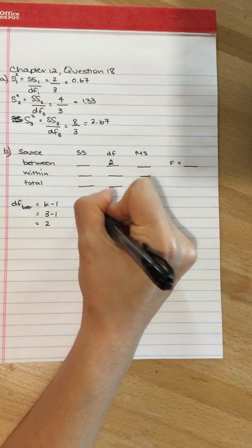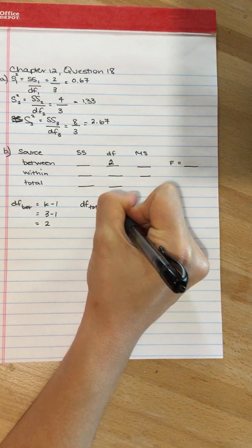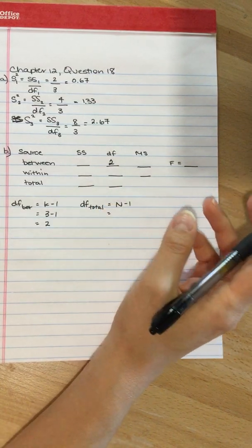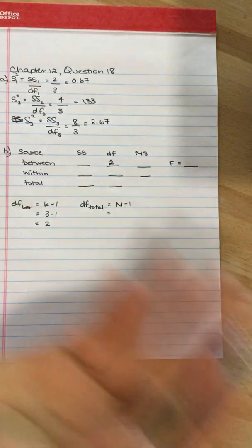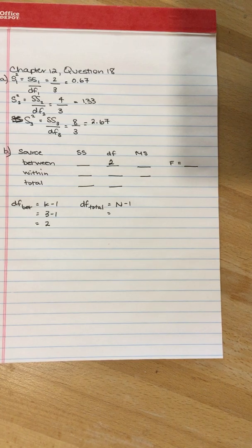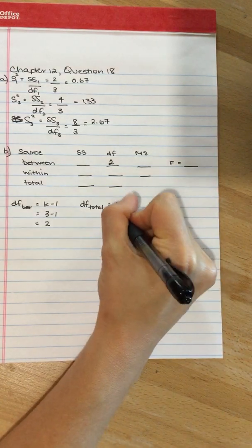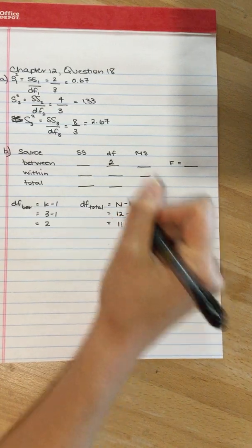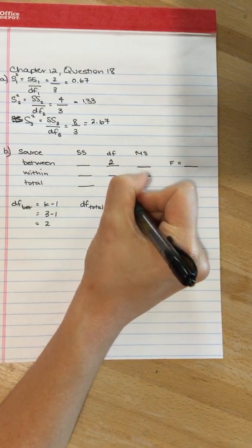Degrees of freedom total is big N minus one, and that is given to us. We've got four participants per condition, three conditions, and that is 12. So 12 minus one, the degrees of freedom here is 11.